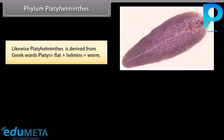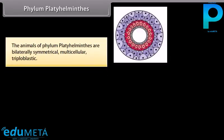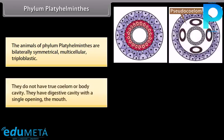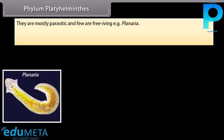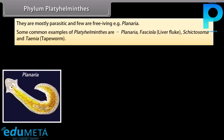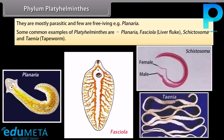Phylum Platyhelminthes is derived from Greek words platis, meaning flat, plus helminthes, meaning worm. They have leaf-like or ribbon-like dorsoventrally flat body, so they are also known as flatworms. The animals of Phylum Platyhelminthes are bilaterally symmetrical, multicellular, and triploblastic. They do not have a true coelom or body cavity. They have a digestive cavity with a single opening, the mouth. They are mostly parasitic and few are free-living, e.g. Planaria. Common examples are Planaria, Fasciola (liver fluke), Schistosoma, and Taenia (tapeworm).